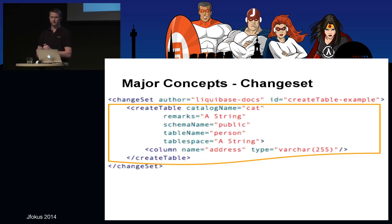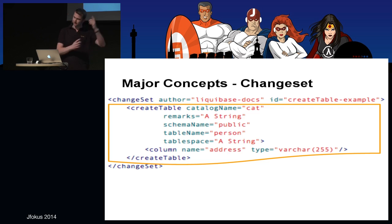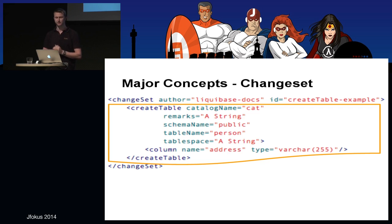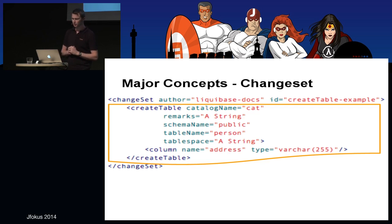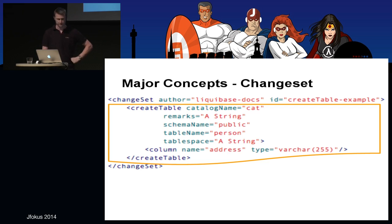The basic concept of Liquibase is the changeset. This example is expressed as XML, so it should be fairly straightforward. In this example we create a table called 'person' and add a column with a type. This is the way to do Liquibase refactorings.